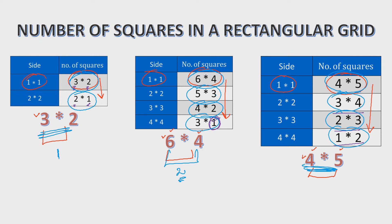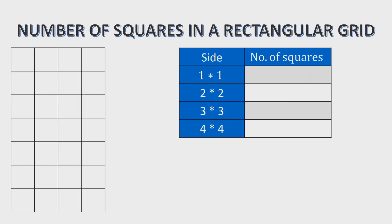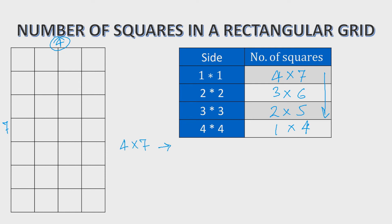On the basis of these observations, we are now very clear. The number of 1 by 1 squares equals m times n, where m and n are the dimensions of the rectangle. Then m and n reduce by 1 unit each step as the square size increases. Let's take a 4 by 7 rectangular grid. The number of 1 by 1 squares is 4 by 7; 2 by 2 gives 3 by 6; then 2 by 5; then 1 by 4. So the total number of squares equals 4×7 + 3×6 + 2×5 + 1×4, and we need to write this in mathematical terms.